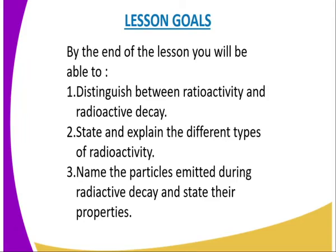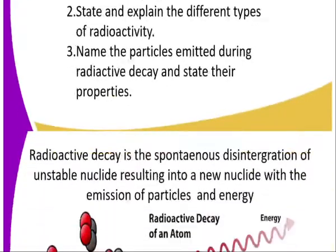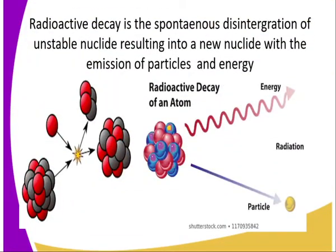By the end of this lesson we will have been able to: distinguish between radioactivity and radioactive decay; state and explain the different types of radioactivity; and name the particles emitted during radioactive decay and state their properties.